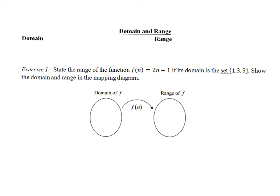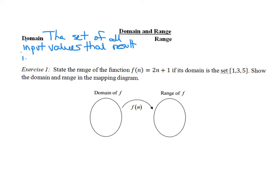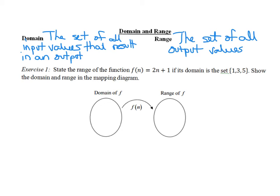This brings us to the definitions for domain and range. The domain should be the set of all input values that result in an output — really just the set of all x values for your function. The range is the set of all output values, which is the set of all y values for our function. We're going to practice finding domain and range in the next few exercises.